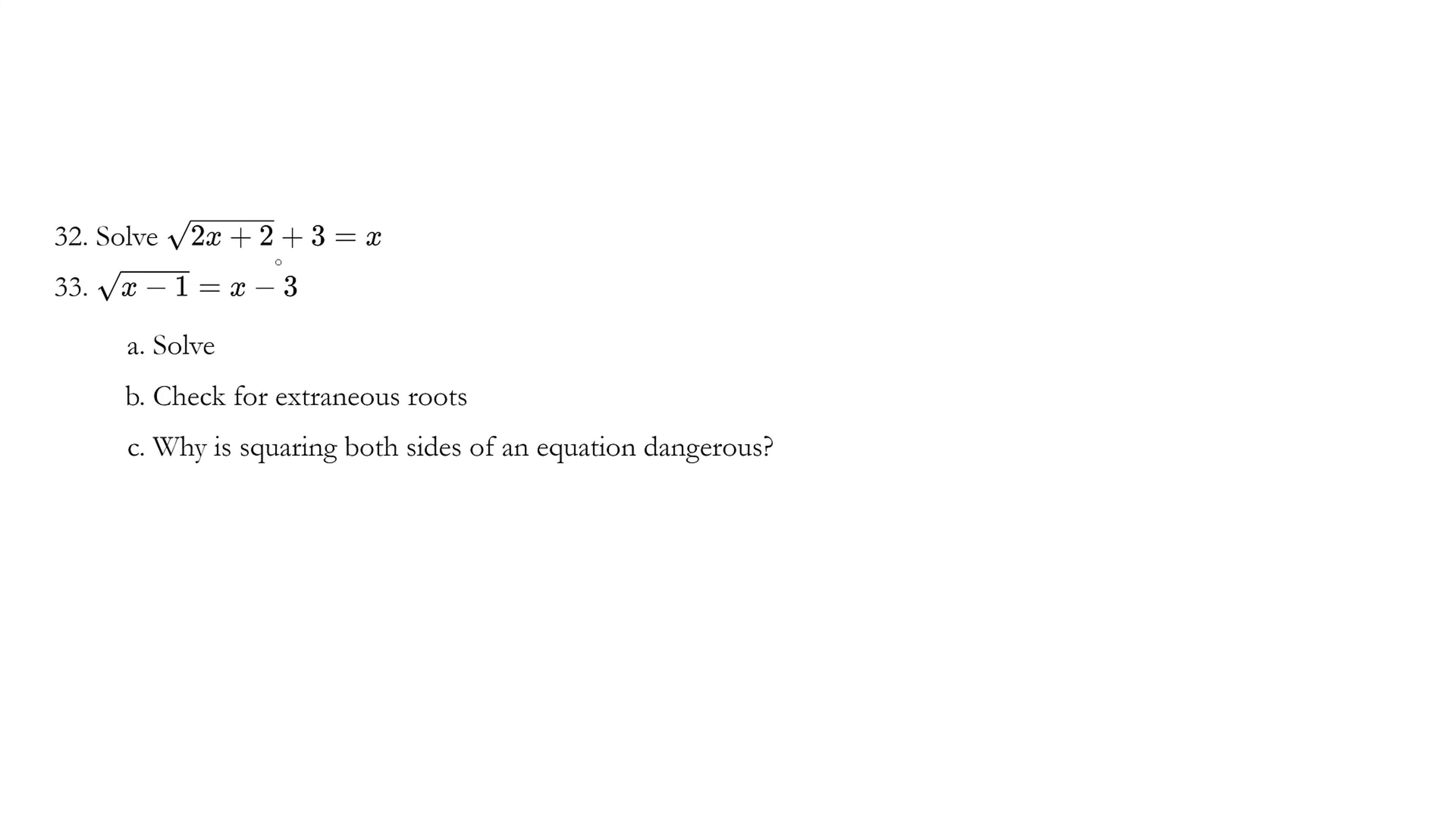Let's try question number 32. We're going to solve. Now why don't we try throwing the 3 over first. So we have √(2x + 2) equals x minus 3.